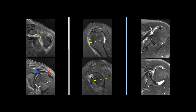The retracted tendon is thickened. There is fraying of the articular surface of the distal subscapularis tendon.